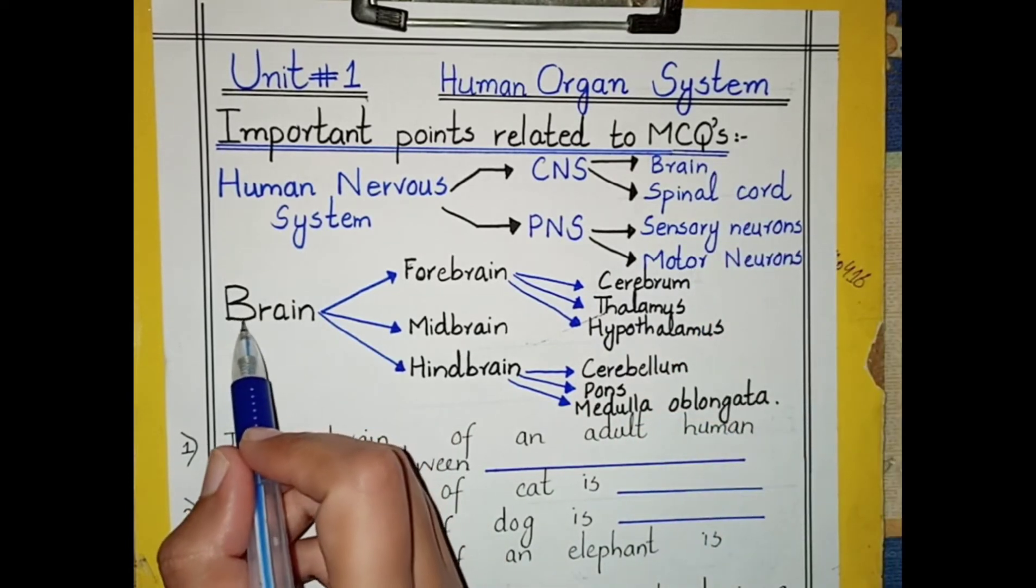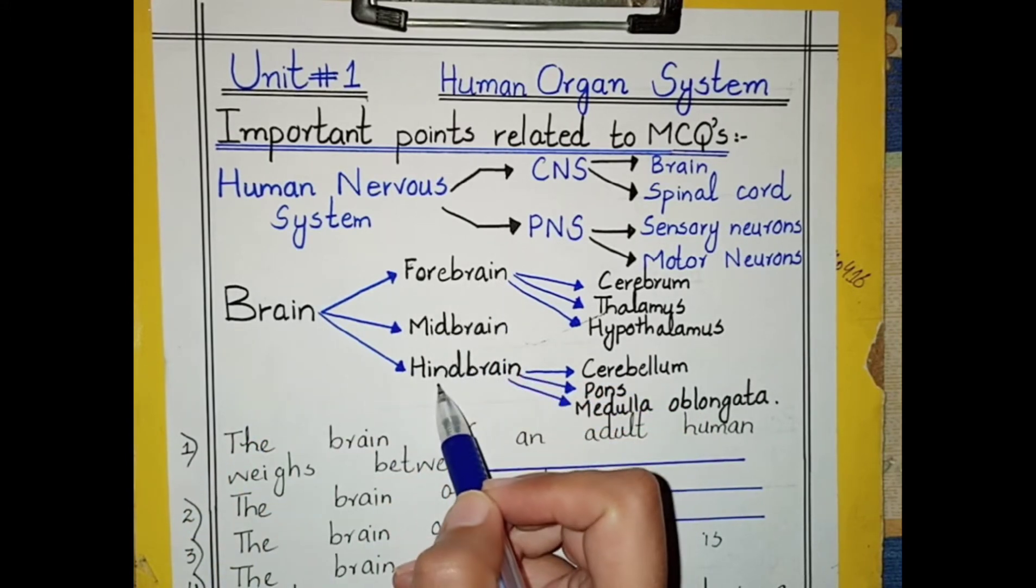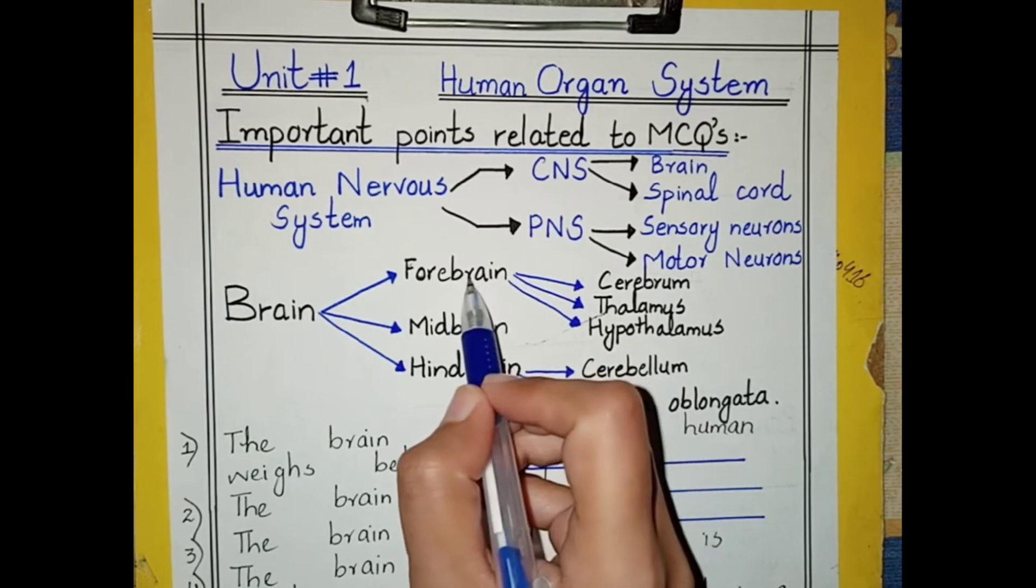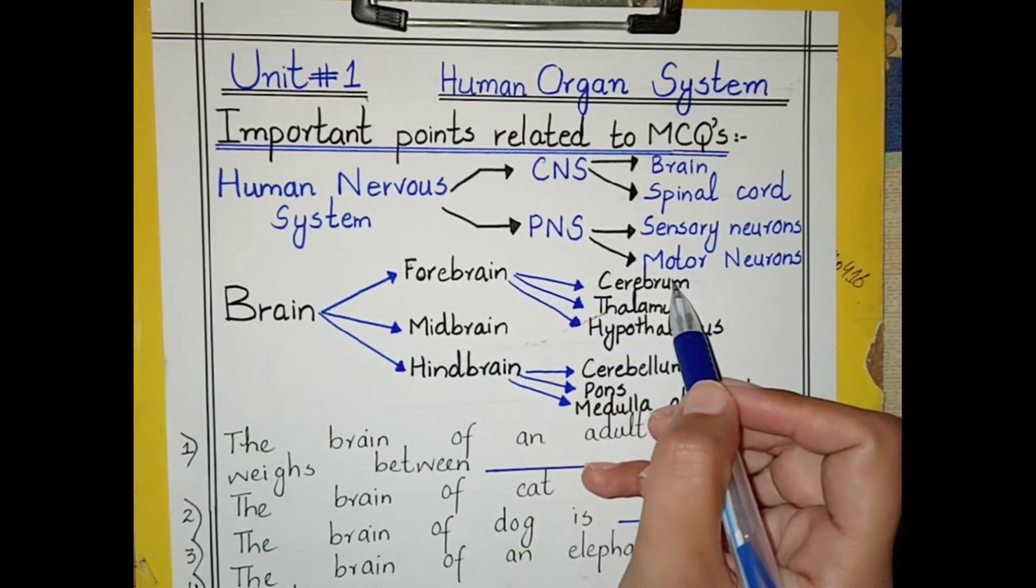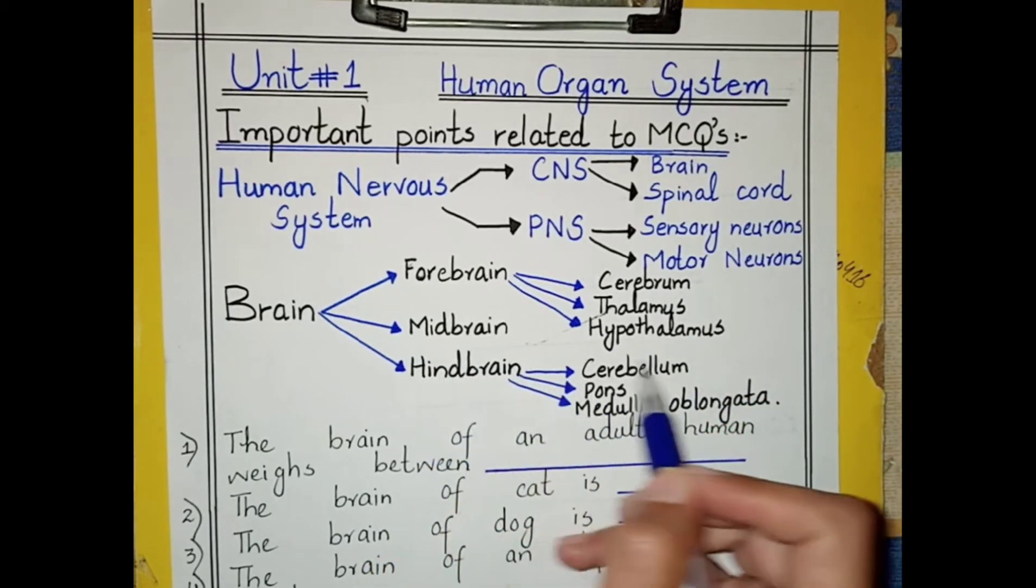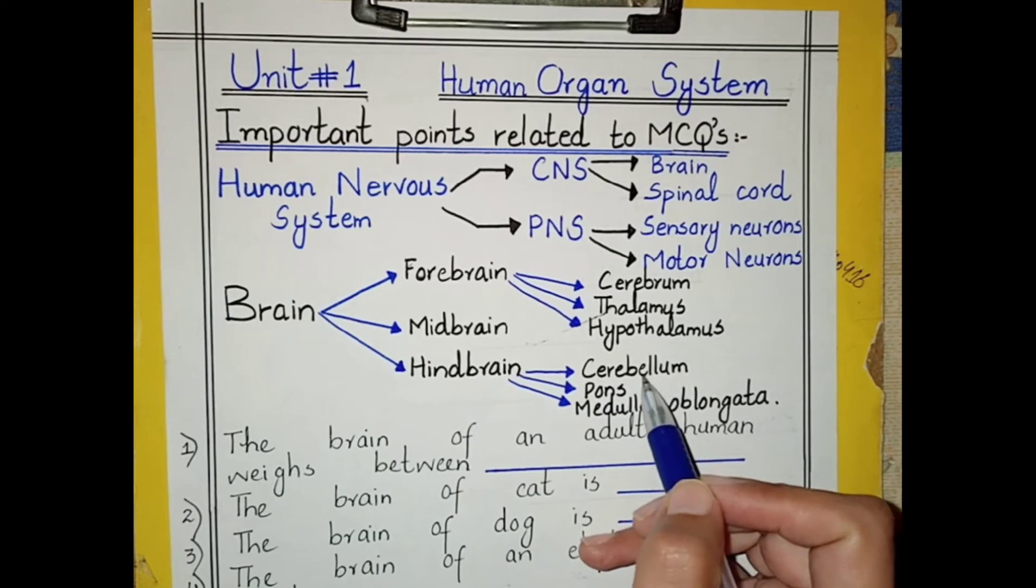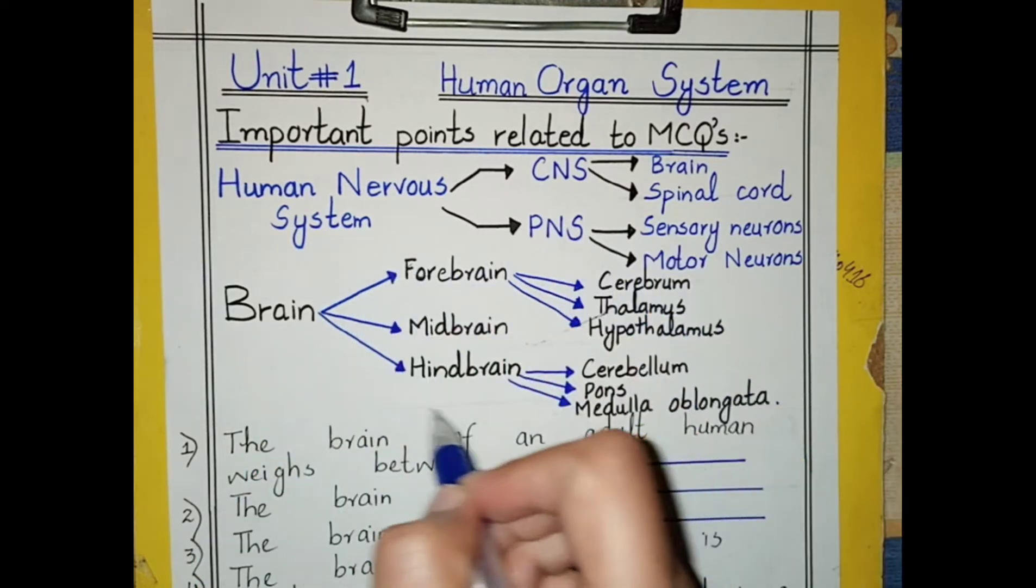The brain is further divided into forebrain, midbrain, and hindbrain. The forebrain is further divided into three parts: cerebrum, thalamus, and hypothalamus. The hindbrain is also further divided into cerebellum, pons, and medulla oblongata. That is all about the nervous system.